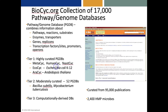BioCyc is a collection of 17,000 pathway genome databases. Each pathway genome database, or PGDB, combines information about the metabolic pathways and reactions of an organism, its enzymes and transporters, its genes and replicons, and in some cases its regulatory network.